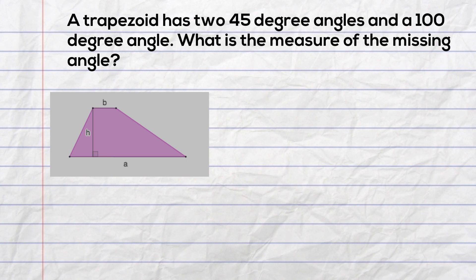Let's work an example problem. A trapezoid has two 45 degree angles and a 100 degree angle. What is the measure of the missing angle?